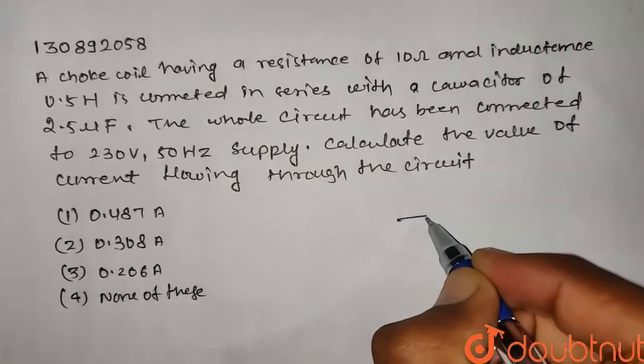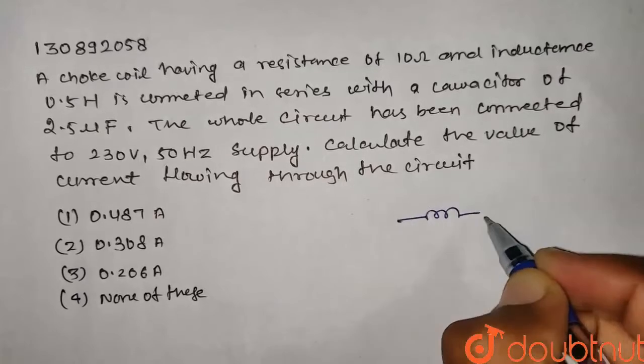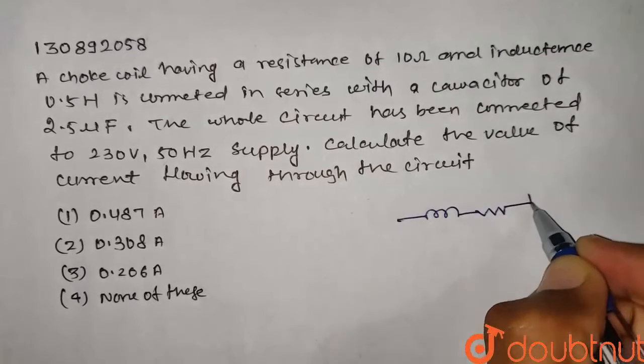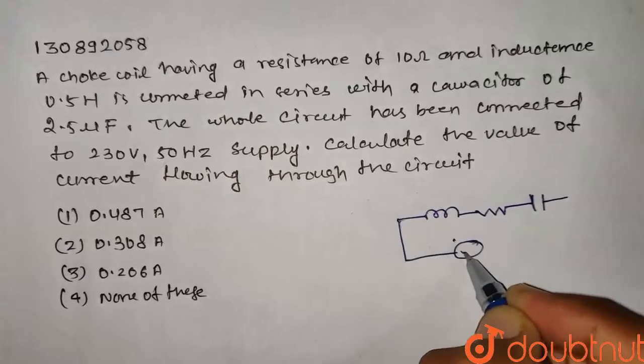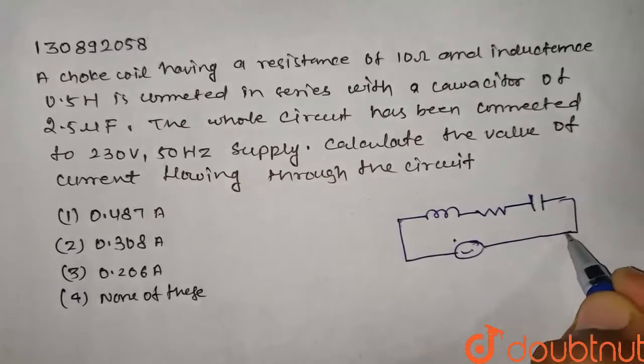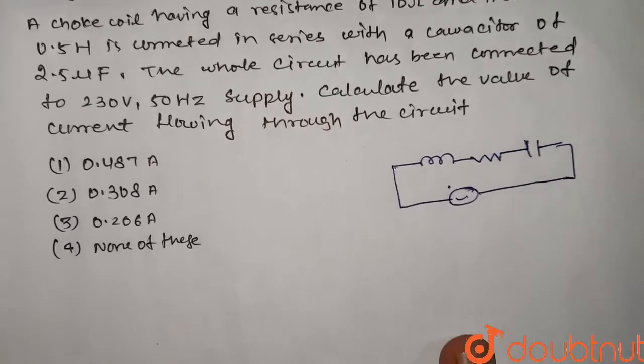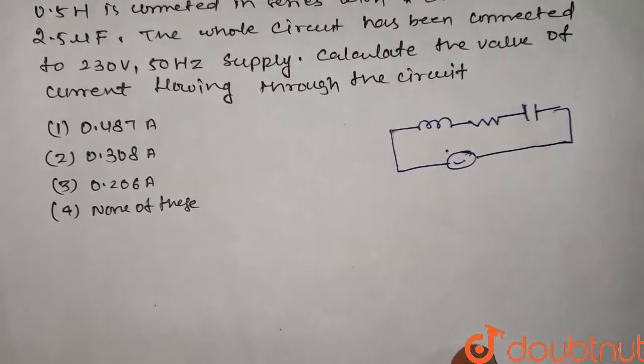So here we have L, R and C connected to an AC source. Here we have a phase diagram for calculating the impedance Z.